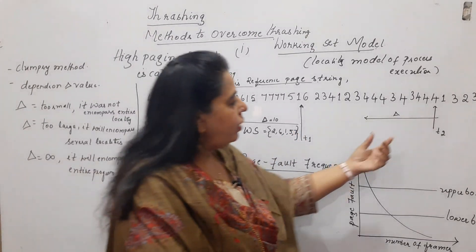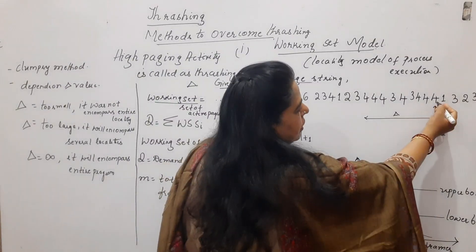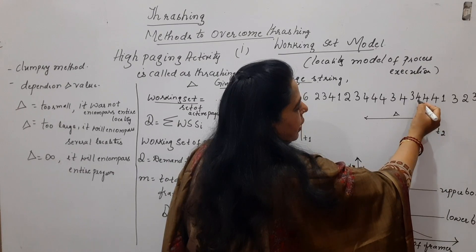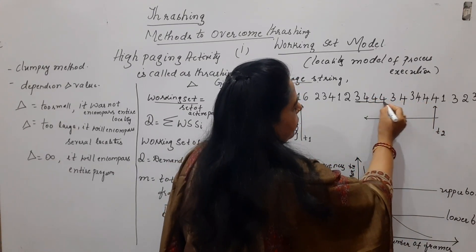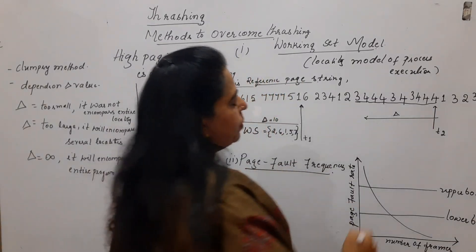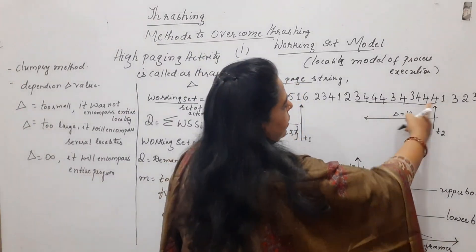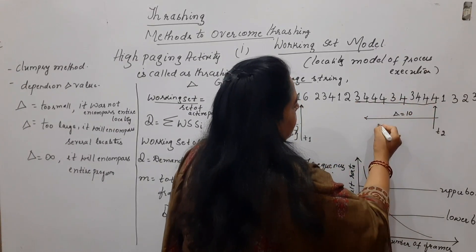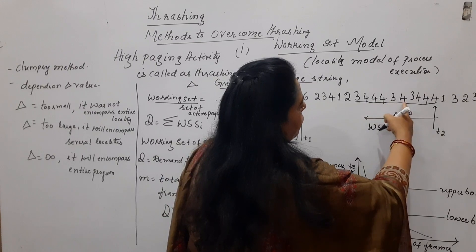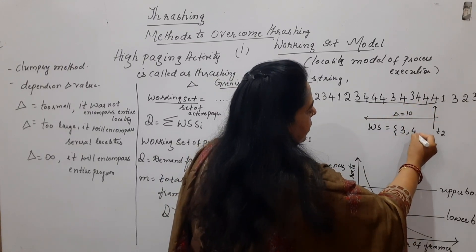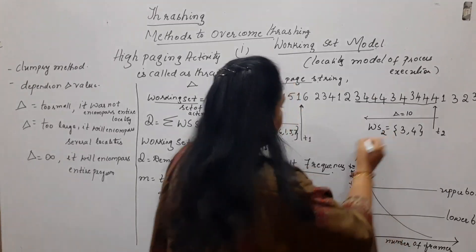In the same manner, if we examine at time t2, we look at the previous 10 pages from that point. Because we set delta as 10, we examine those 10 pages. The working set at t2 contains only 2 unique pages: 3 and 4. So, working set 2 = {3, 4} and working set 1 = {2, 6, 1, 5, 7}.